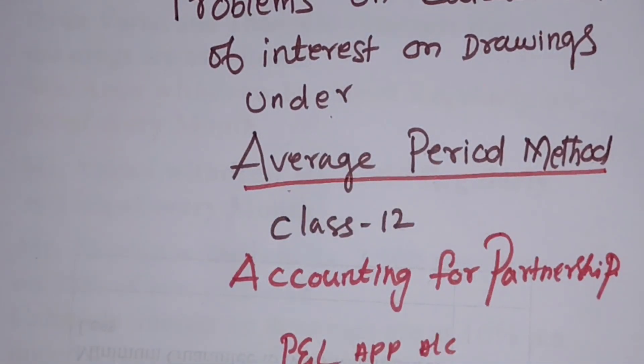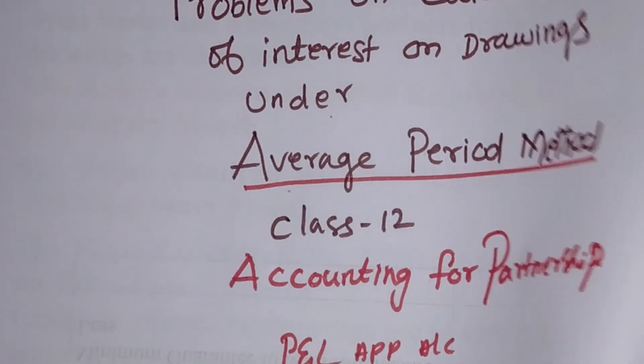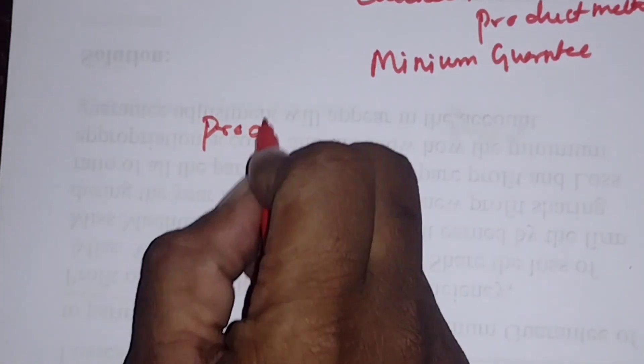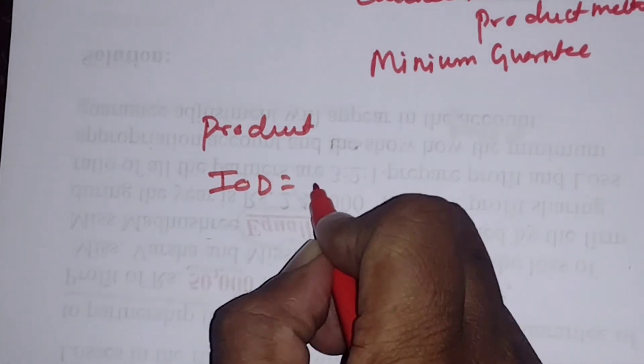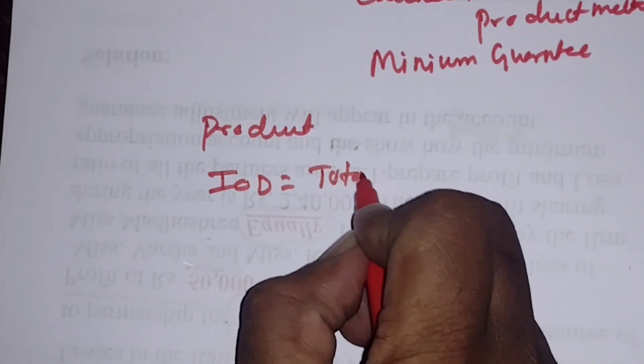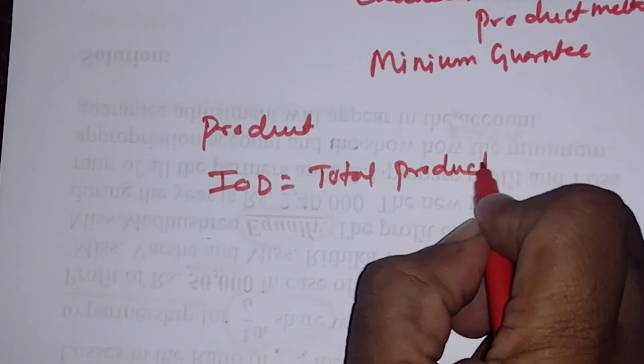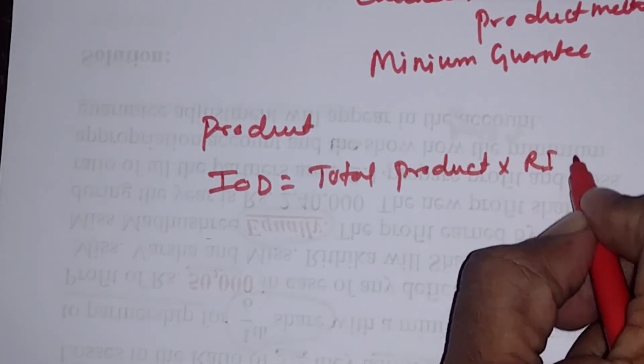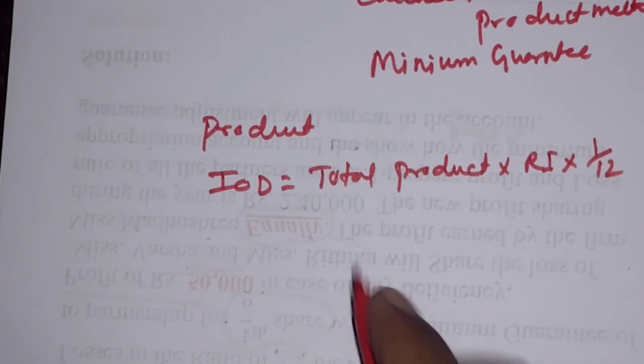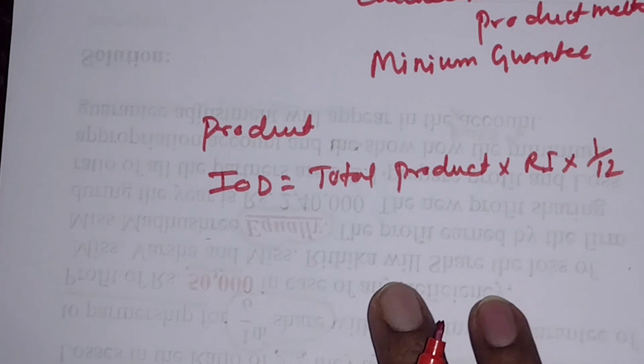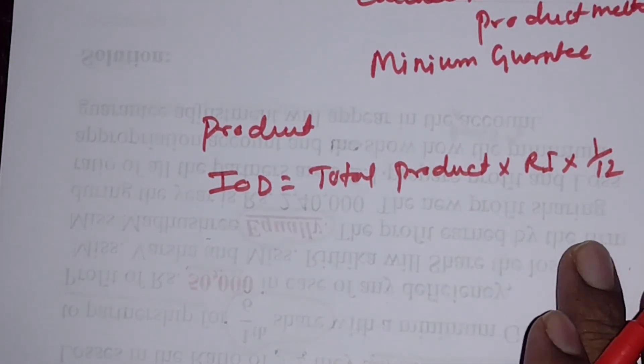What is the difference between the product method and the average period method? Under the product method, the formula is: interest on drawings equals total product multiplied by rate of interest multiplied by 1/12. This formula is applied because the drawings are made on different dates with different amounts.